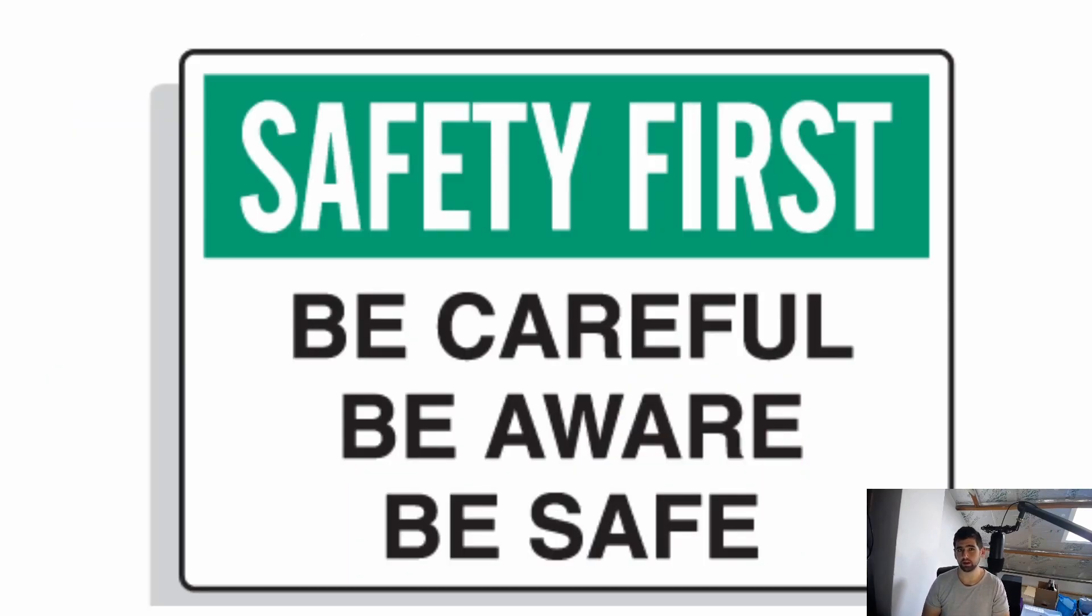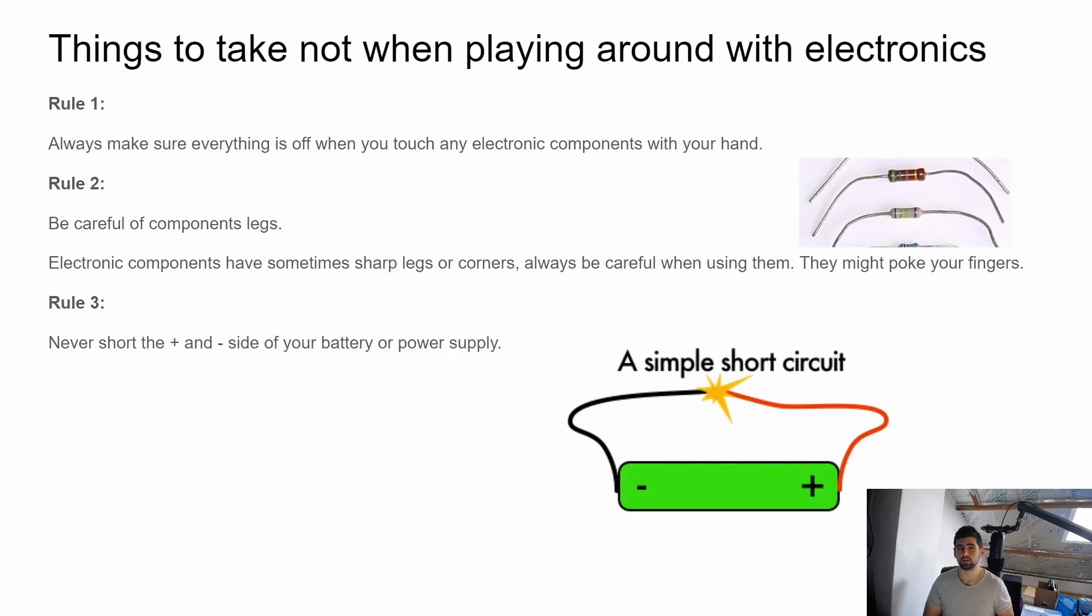But before you start we need to think about safety. With electronics we have voltages and currents. The voltage and currents you're using for this Arduino system aren't really dangerous at all, you can't hurt yourself, but you can maybe break some components. So there's three rules you have to follow. First, make sure everything's always off when using anything. If you've got lights shining, make sure you remove the power. If the Arduino is on and you want to plug stuff into it, make sure you remove the power. Also be very careful with component legs.